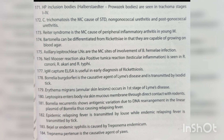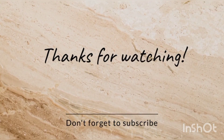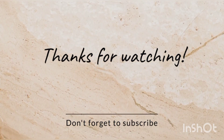Bartonella can be differentiated from Rickettsia in that they are capable of growing on blood agar. Axillary or epitrochlear lymph nodes are the most common sites of involvement in Bartonella henselae infection. Neil-Mooser reaction (positive tunica reaction — testicular inflammation) is seen in Rickettsia conori, R. akari, and R. typhi. IgM capture ELISA is useful in early diagnosis of rickettsiosis. Borrelia burgdorferi is the causative agent of Lyme's disease, transmitted by Ixodid tick; erythema migrans annular skin lesions occur in the first stage. Borrelia recurrentis shows antigenic variation due to DNA rearrangement in the linear plasmid, causing relapsing fever — epidemic transmitted by louse, endemic by tick. Treponema endemicum causes endemic syphilis; Treponema pertenue is the causative agent of yaws.